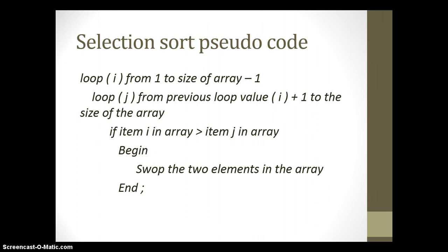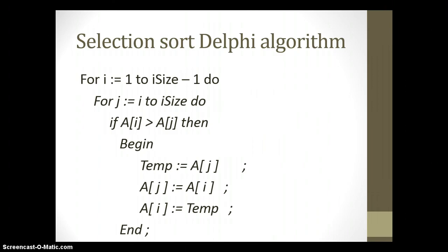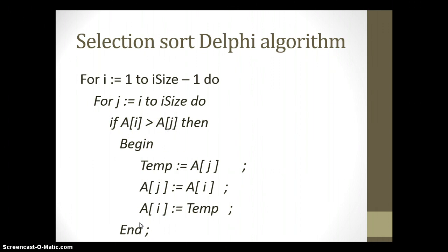You take this logic and apply it to Delphi. In the Delphi code, the first loop goes from one to our size, where our size is the size of the array minus one. The second loop goes from R plus one to size. Then we check if the value is in the correct order, and if not, we do a swap to put it in the correct order.